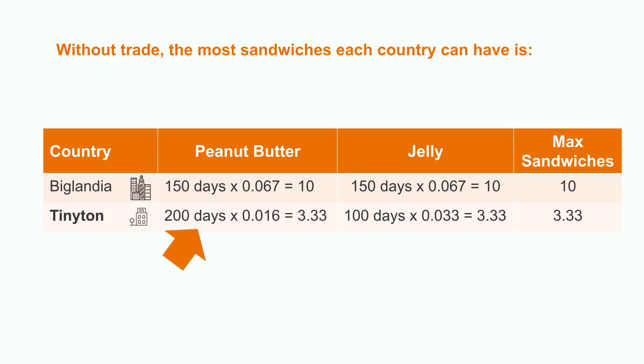Tinyton, on the other hand, because they don't make peanut butter as well as they make jelly, they're going to spend more of their days making peanut butter to even out the production of jelly. That means to maximize their sandwiches, they will have to spend 200 days making peanut butter and 100 days making jelly, resulting in 3.33 tons of sandwiches.